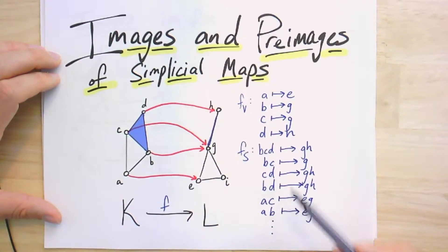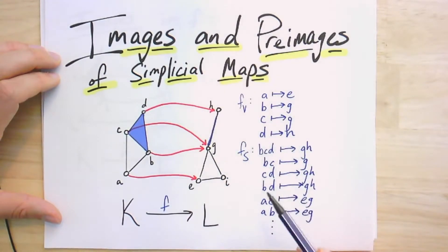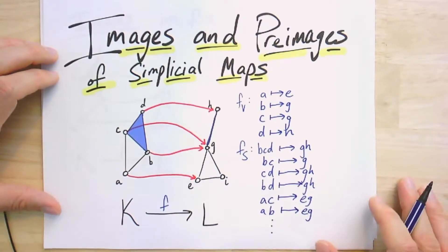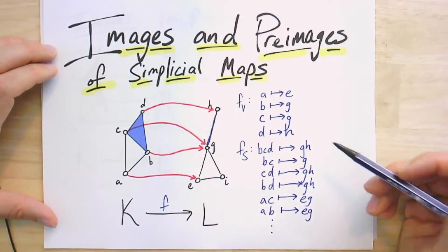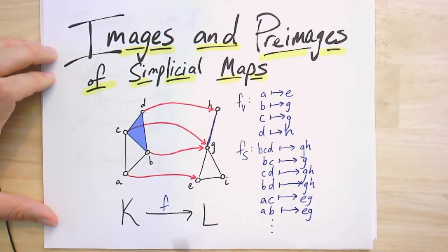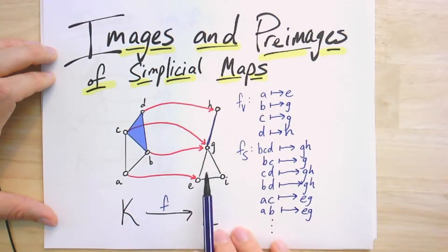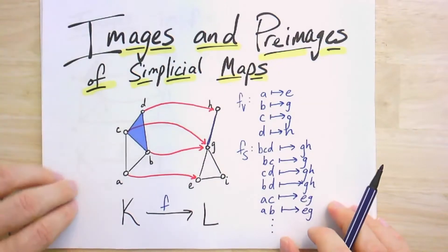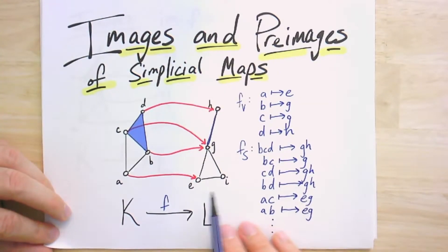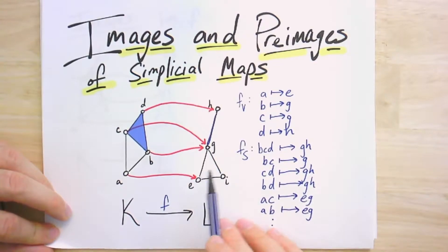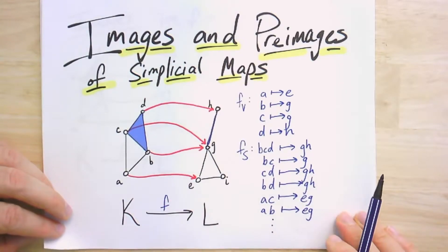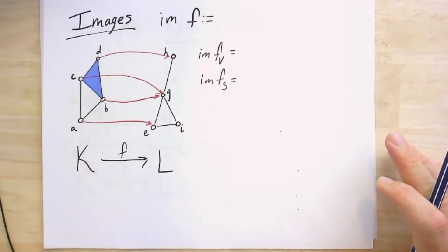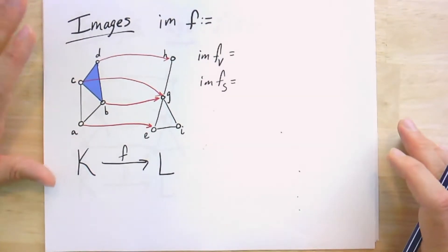This is our simplicial map. We're going to think about it in terms of the image of the map, which lives in L, and we're going to talk about pre-images of subcomplexes of L. We'll take a subcomplex on the right and pull it back to see what parts of K map to it. The punchline is that the image is going to be a subcomplex of L, and for every subcomplex of L the pre-image will be a subcomplex of K.